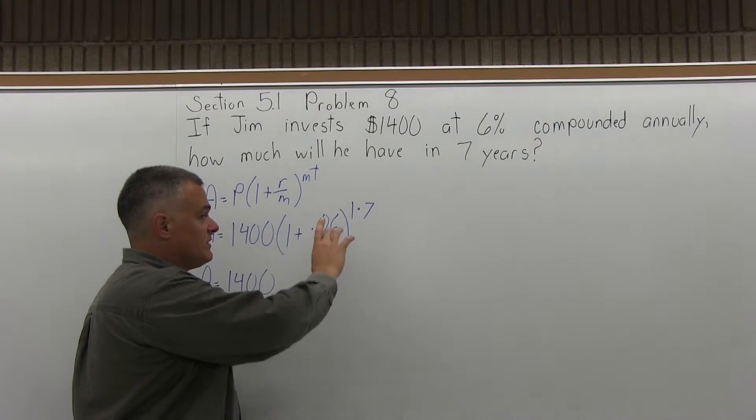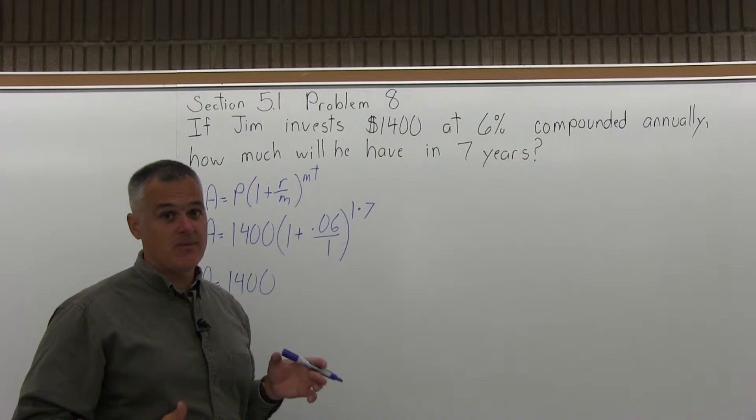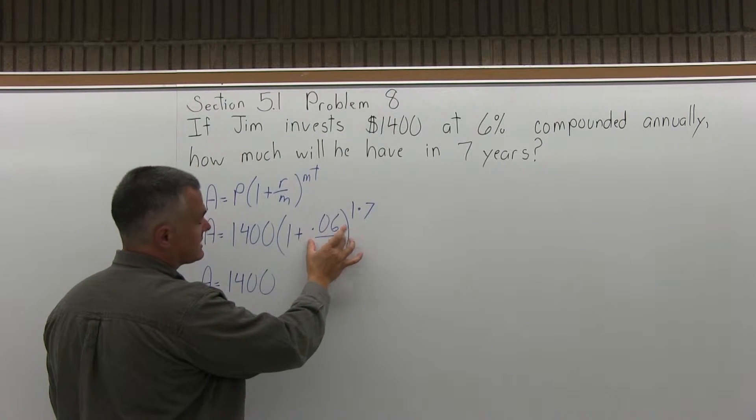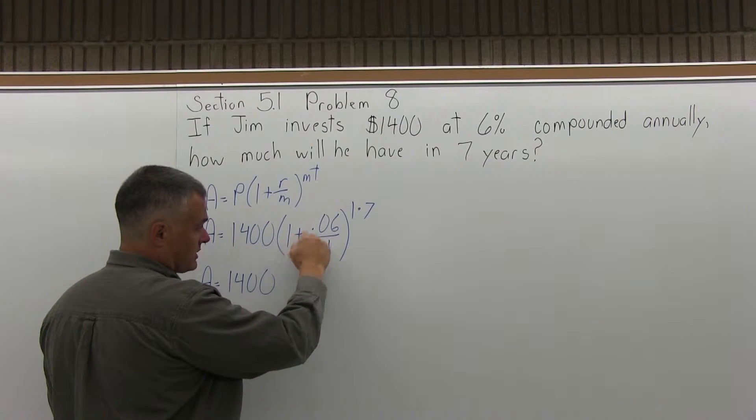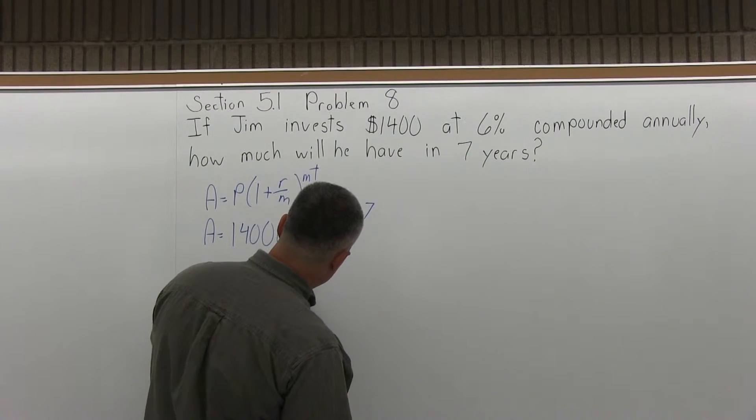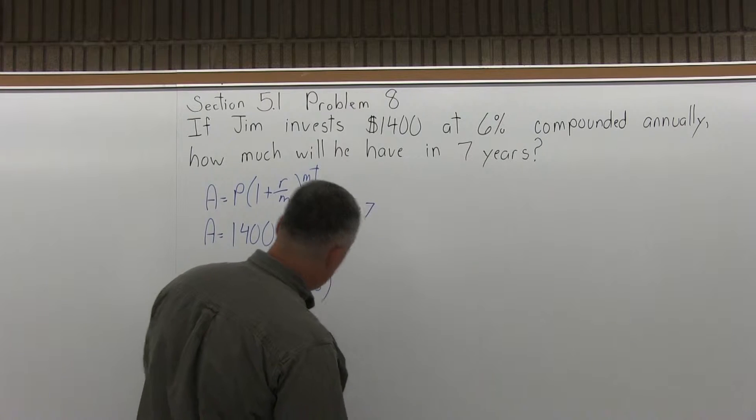You're supposed to do the division first. 0.06 divided by 1, of course, is 0.06. And you're going to take that answer of 0.06 and add 1 to it. I can do all the parentheses in one shot. In the parentheses, I have 1.06.